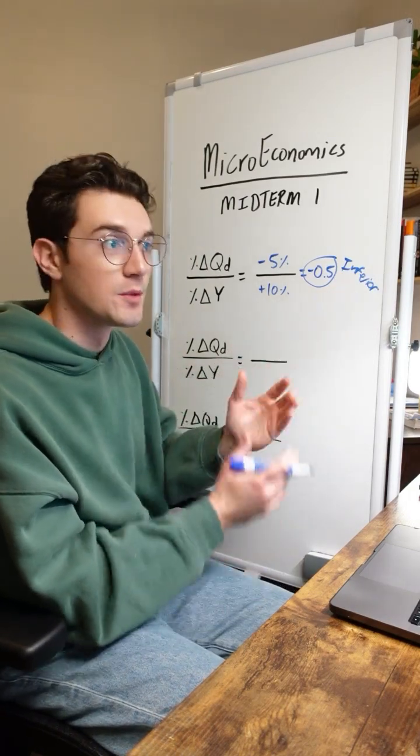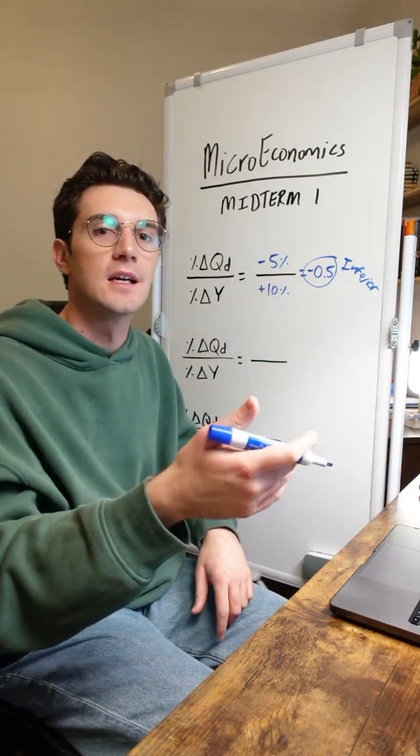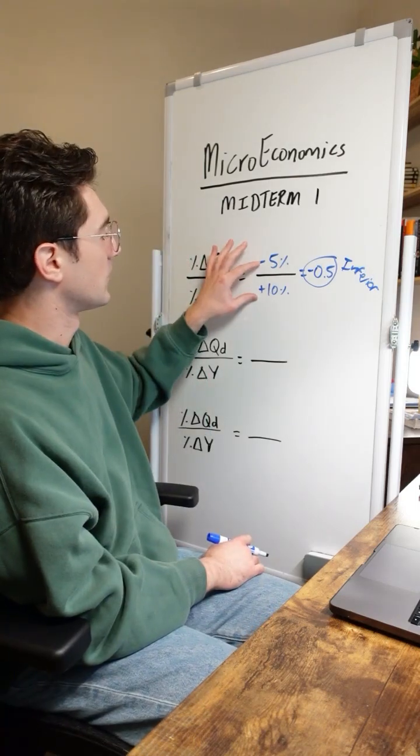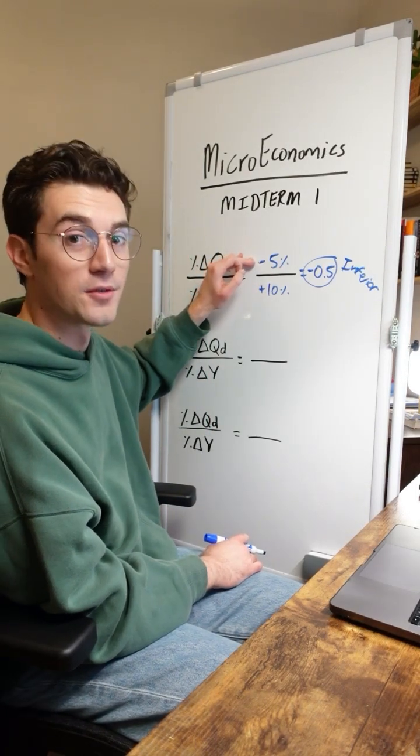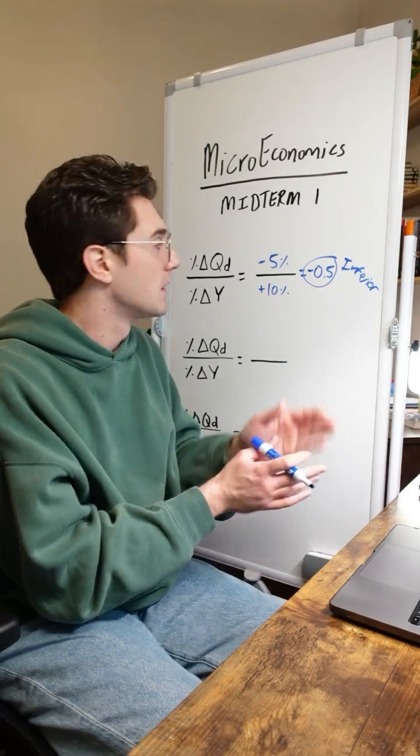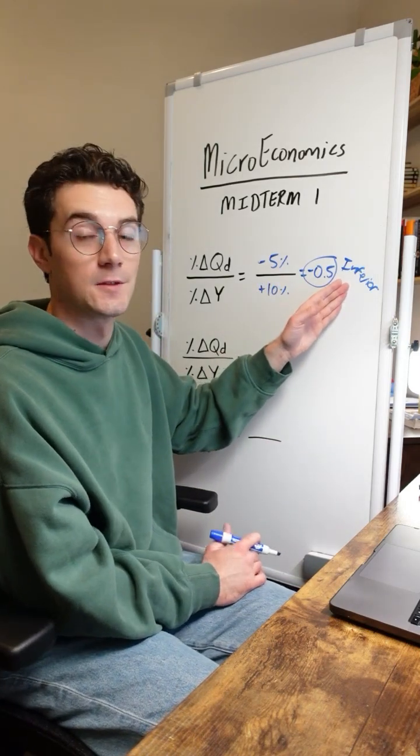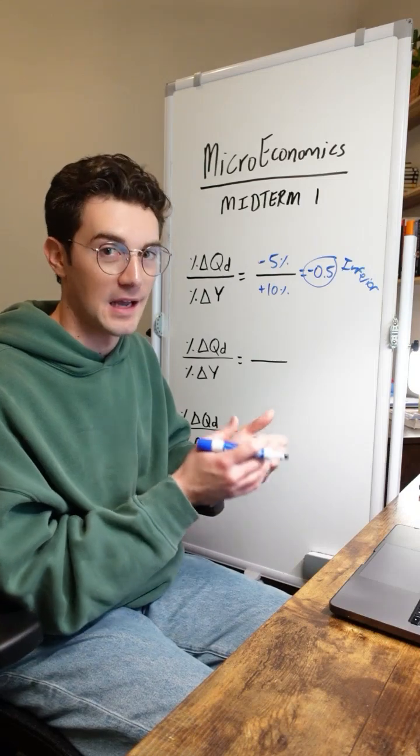It's inferior because consumers don't prefer it. When they have more income, they're switching to better goods. If this was flipped and our income was decreasing, the quantity demanded of this good would be increasing. Consumers are now poor and opt to buy the inferior good because it's what they can afford. It's not that they want to buy it, it's just that they have to.